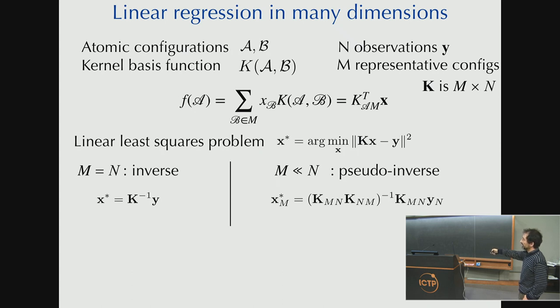So if M is much less than N, then instead of K inverse, we use the pseudo inverse, right? So that's just a slightly more complicated linear algebra expression of a non-square matrix multiplying the observations, and that gives you the coefficients. If you implemented this directly, it's extremely unstable.